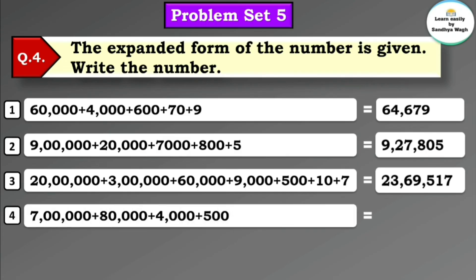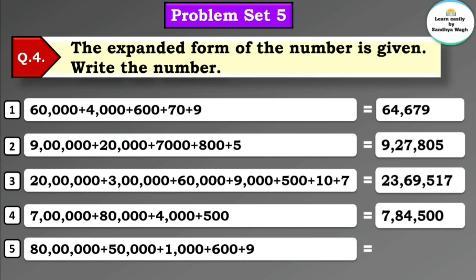Next: 7,00,000 + 80,000 + 4,000 + 500; tens and units are not given so they are 0. The number is 7,84,500. Next: 80,00,000 + 50,000 + 1,000 + 600 + 9; tens and units not given, so they are 0. This number is 80,51,609.